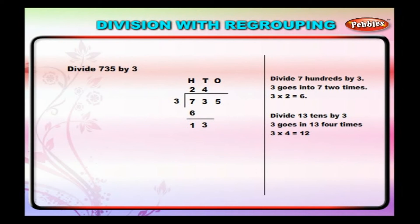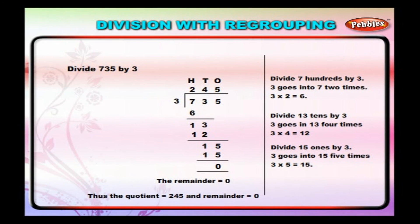Step 4: Bring down 5 ones. 13 minus 12 is equal to 1. Bring down 5. Divide 15 by 3. The remainder is equal to 0. Thus, the quotient is equal to 245 and remainder is equal to 0.